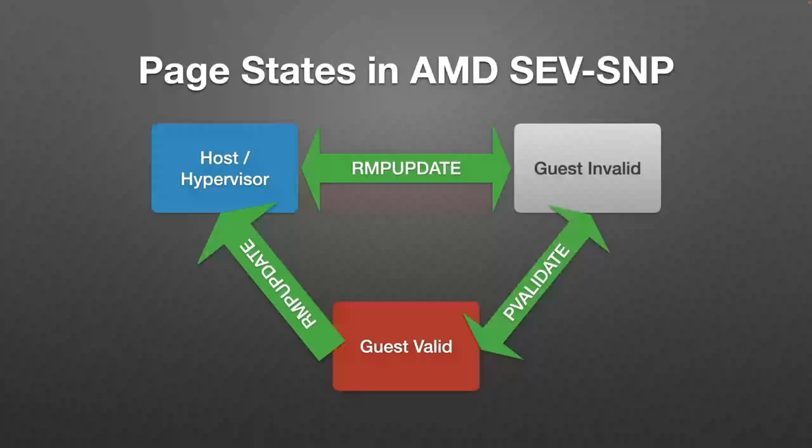When a page is guest-invalid, the hypervisor can still read but not write it. The guest can map the page encrypted but cannot access it yet. To make the page guest-valid, the guest executes the PVALIDATE instruction, changing state from guest-invalid to guest-valid. Once guest-valid, the hypervisor cannot write to the page and the guest must map it encrypted — mapping a guest-valid page unencrypted also causes an exception. The page can now store encrypted data.